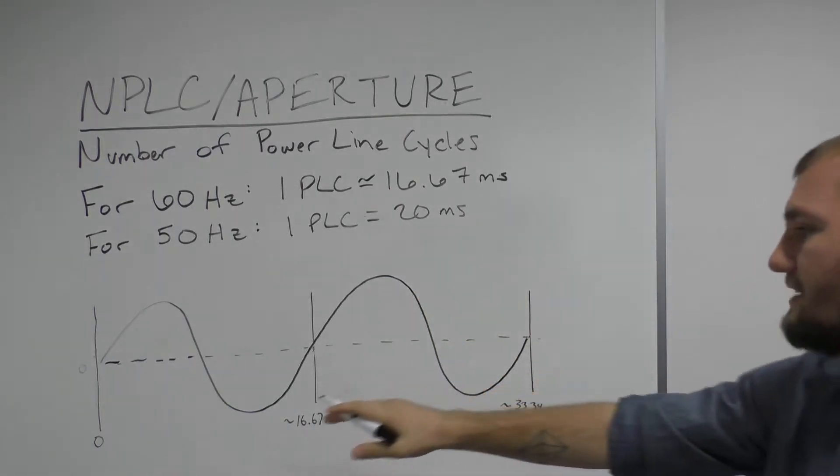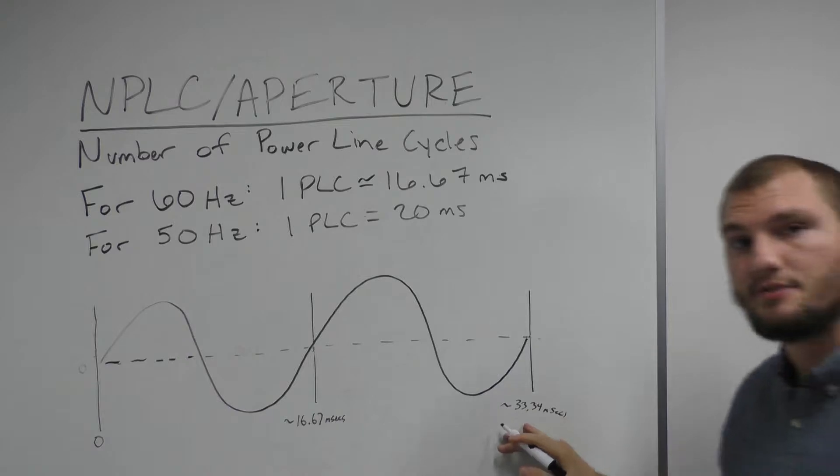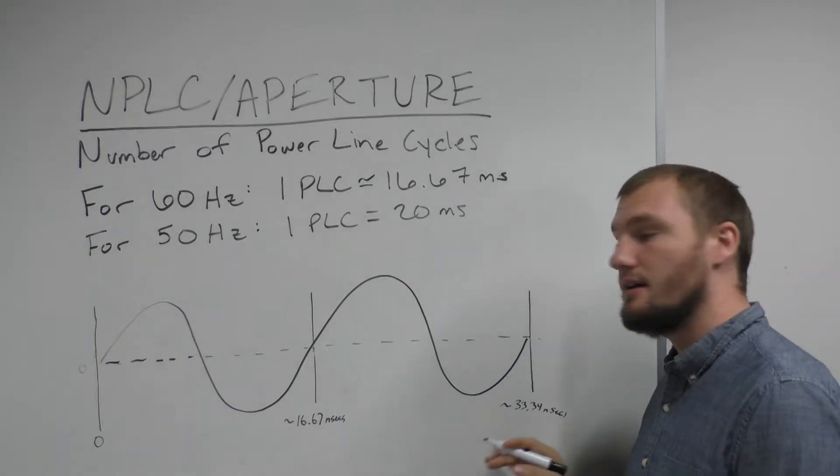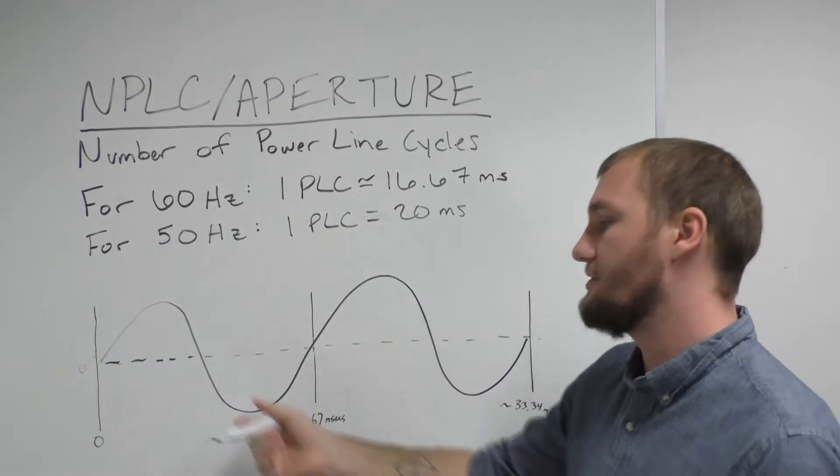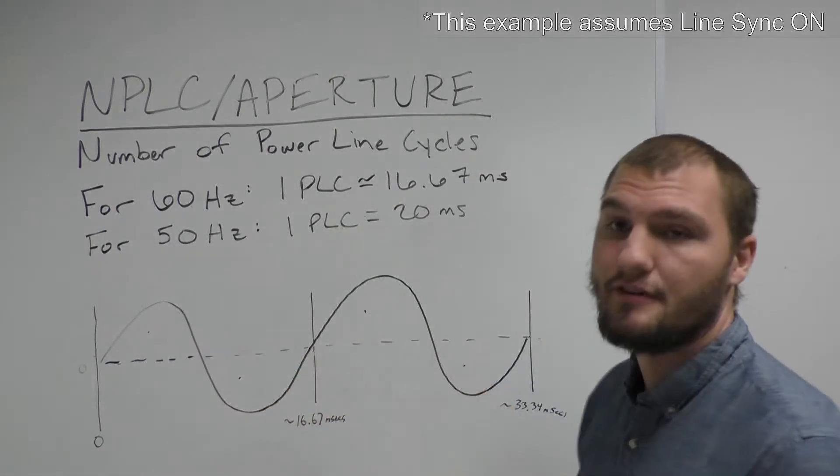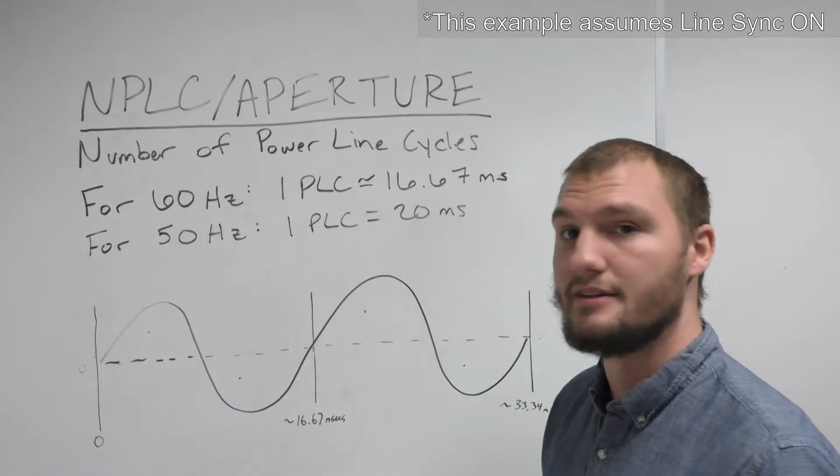Now this amount of time for measurement which is about 33.34 milliseconds or 2 PLC would be a relatively quiet setting for PLC because you have equal parts positive and negative power line noise being integrated into the measurement.